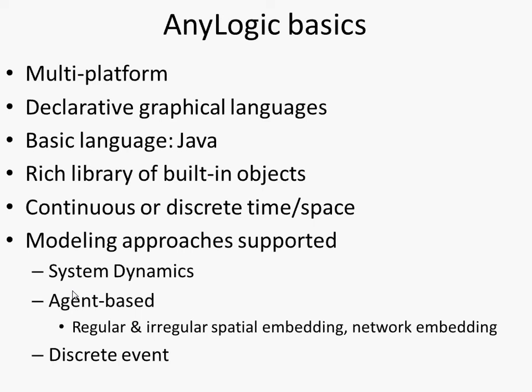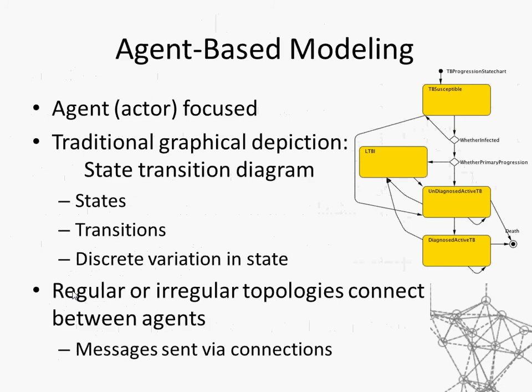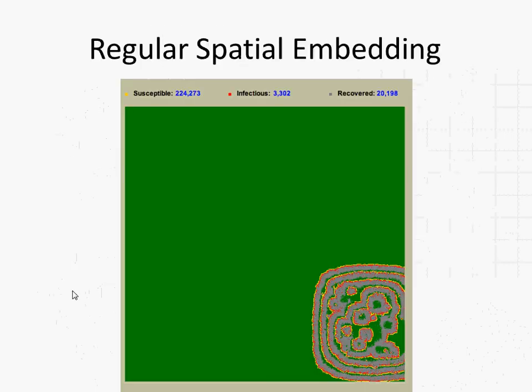Model behavior can be described using three popular ways: stocks and flows, termed system dynamics; agent-based methods; and discrete event modeling, where the focus is on resources and processes that handle more passive entities flowing through the model — think patients in a hospital undergoing diagnostic procedures, operations, or medical workups, with queues for expensive equipment like MRI. In AnyLogic, flowcharts graphically display the process by which entities access resources and flow through the system, both spatially and logically.